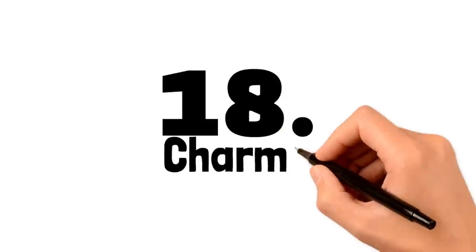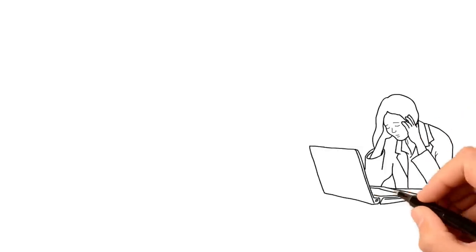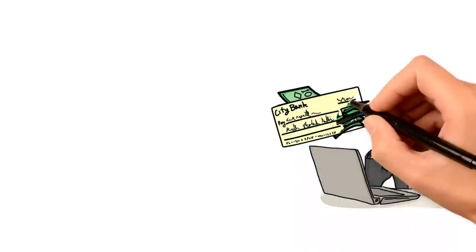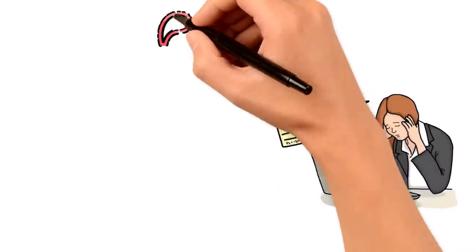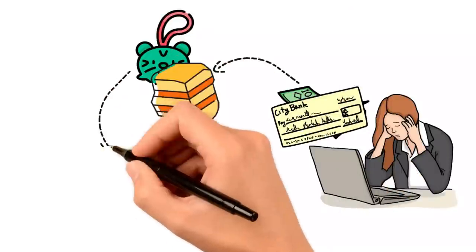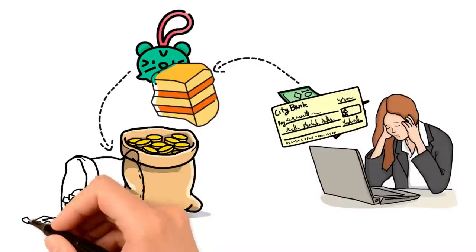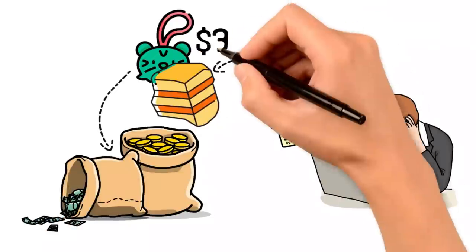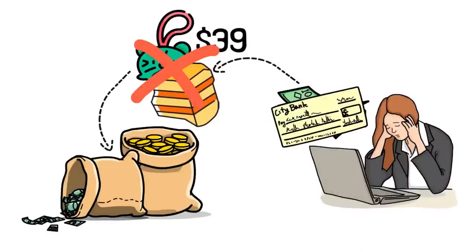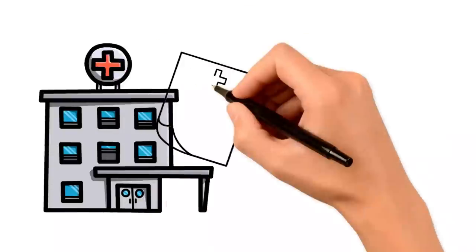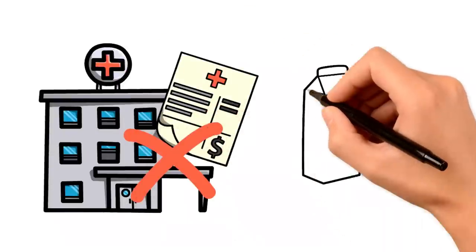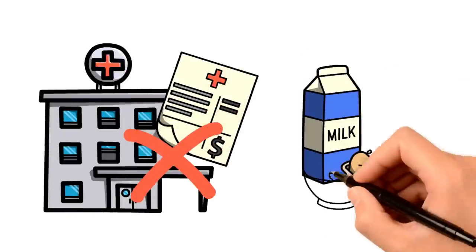Number eighteen, charms. How people without much money end up spending the little they have on things like lucky charms or stones that are supposed to bring them wealth. Seriously, wouldn't it make more sense to keep that $39 in your pocket instead of spending it on rocks? Number nineteen, health. Taking care of your health doesn't mean you need to spend a fortune. It's all about buying the right combination of food at the grocery store.